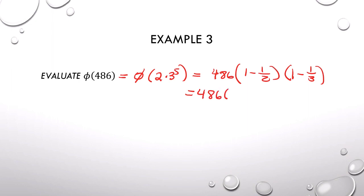Simplifying a bit, that's 486 times 1 half, times 2 thirds, which gives us 162.